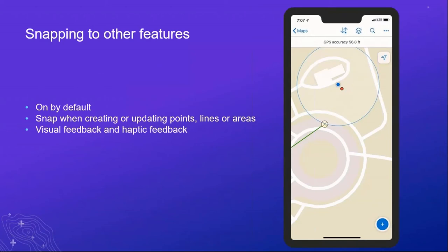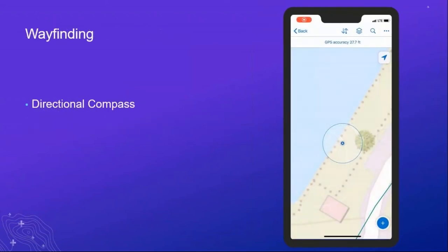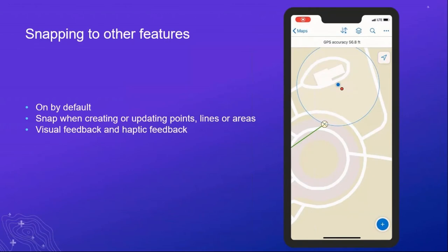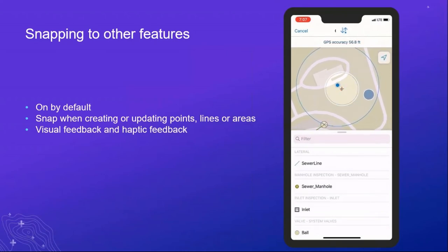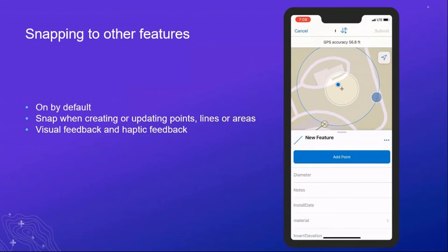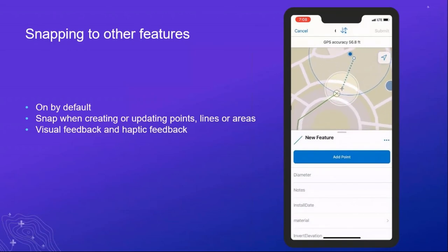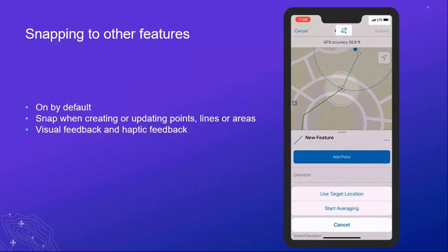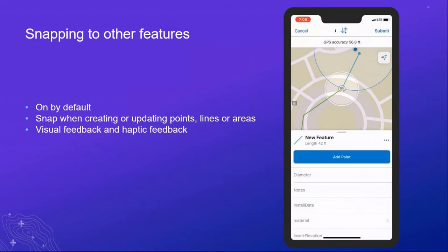Snapping is one of the newer features — it comes on by default. It is now a more intuitive way of collecting or adding features to your map. As you move around, you'll see a circle visual indicator showing where you can snap to, and you also get haptic feedback from your device, making it very intuitive. Think if you're collecting at a sewage treatment plant — all of the joints and valves you have to connect to — snapping makes you rethink how you're connecting and collecting with Collector.